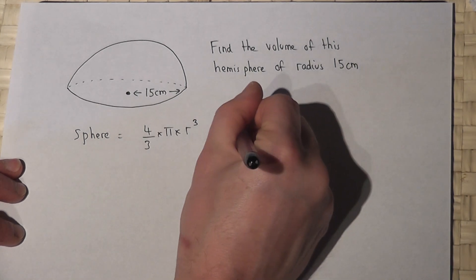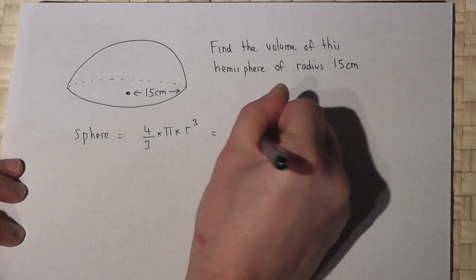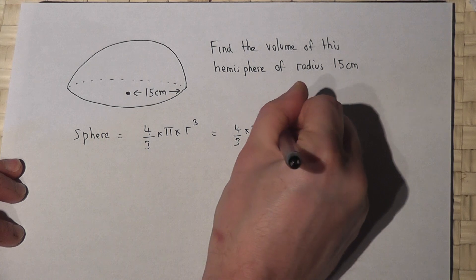So for our sphere it's four thirds times pi times 15 cubed.